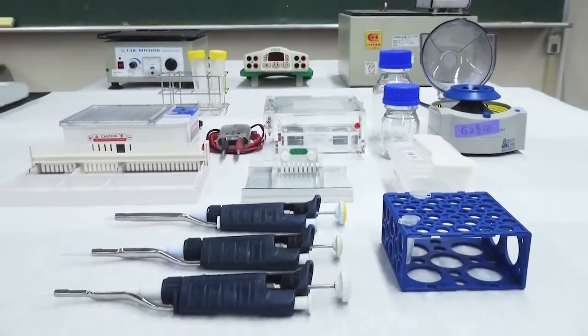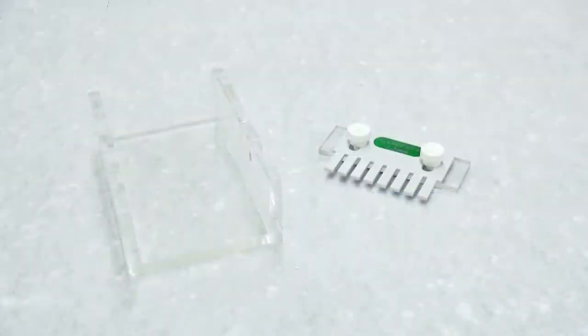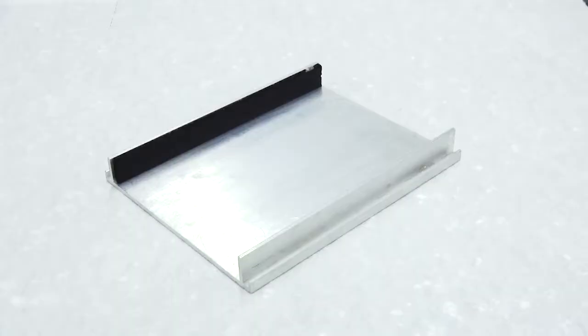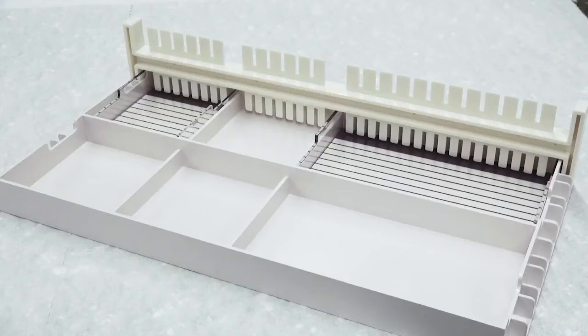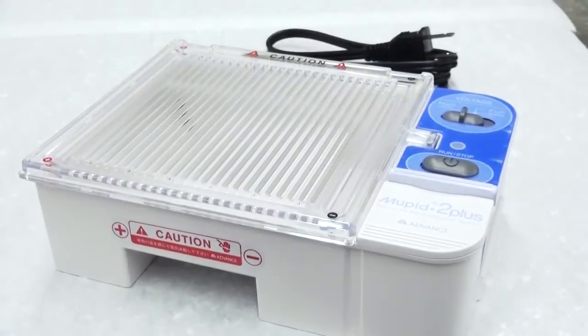In addition to general lab equipment, we need a gel tray, comb, casting plate, and tank with electrodes. You can also use a system with fixed length combs like this.